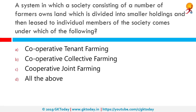A system in which a society consisting of a number of farmers owns land which is divided into smaller holdings and then leased to individual members of the society comes under which of the following? The correct answer is cooperative tenant farming. It is a society which purchases or leases land from the government or some private persons and then in turn leases out the land to its members. The members cultivate the land and pay the rent falling to their share to the society.